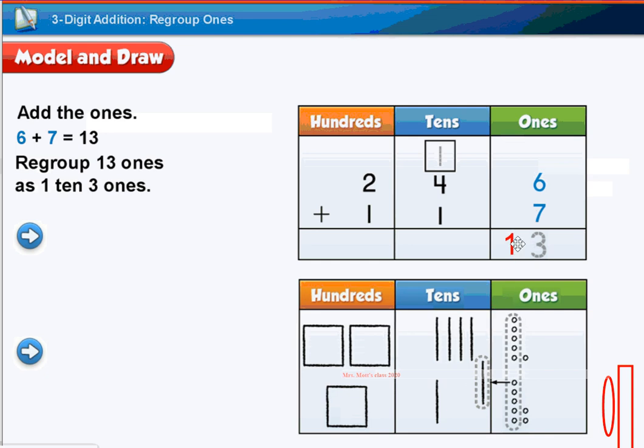Now, when you write 13, are you going to be putting the 1 and the 3 both in the ones place? And the answer is going to be no, because you cannot have more than 9 in any place value. So you're going to leave your 3 here in the ones place, and you're going to put a 1 in the tens place.